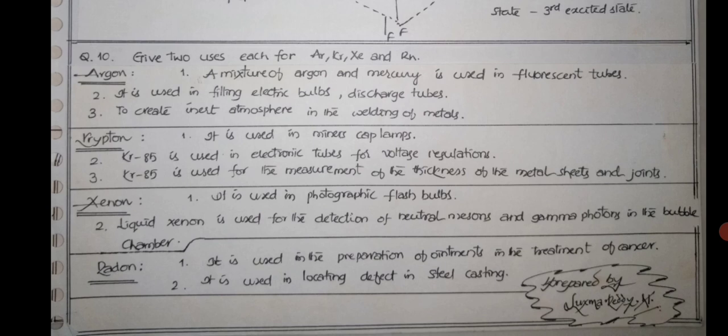Krypton-85, an isotope, is used for measurement of the thickness of metal sheets and joints, even very small metal sheets.